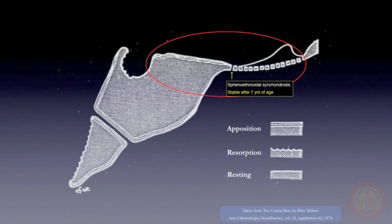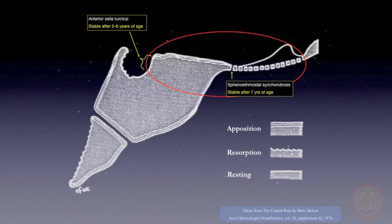After that time, a number of structures, especially those associated with neural tissues, remain stable and can be relied upon for superimposition. Two of the most important structures for cranial-base superimposition are the anterior wall of sella turcica below the anterior clinoid processes, which is stable after five or six years, and the cribriform plate, which is stable after approximately four to five years.